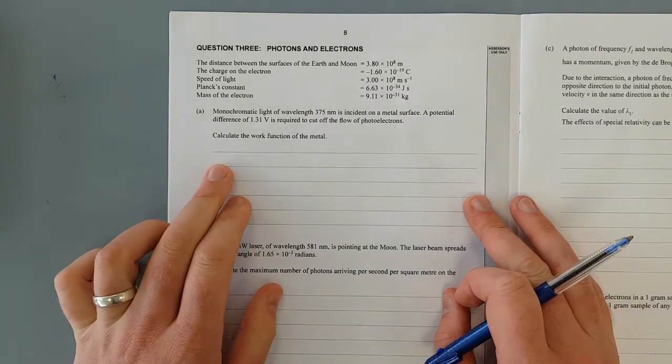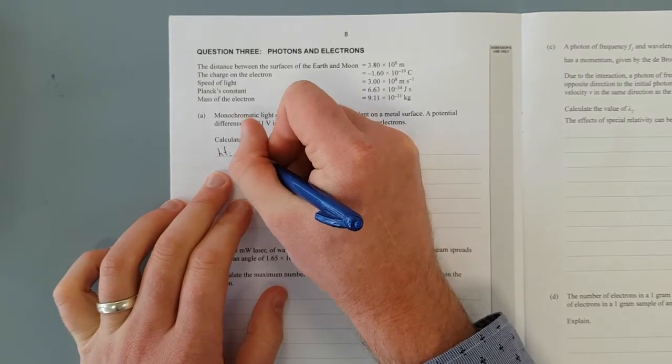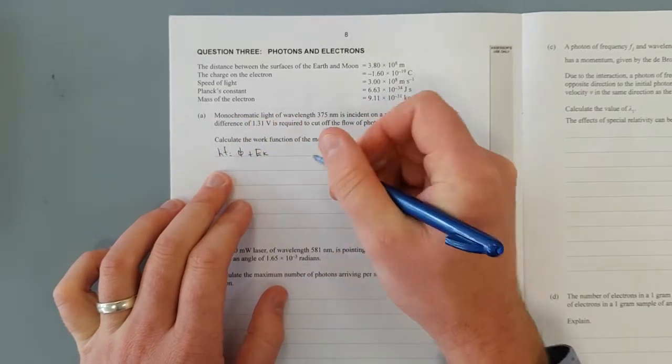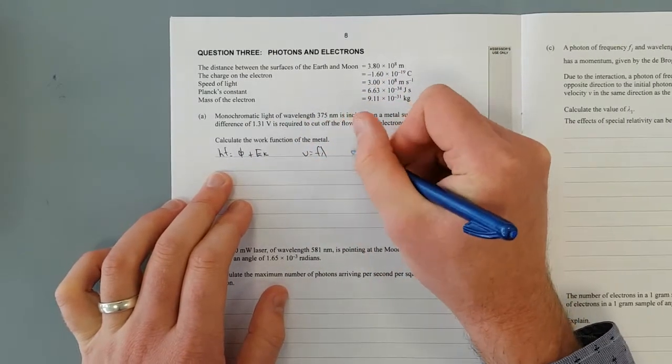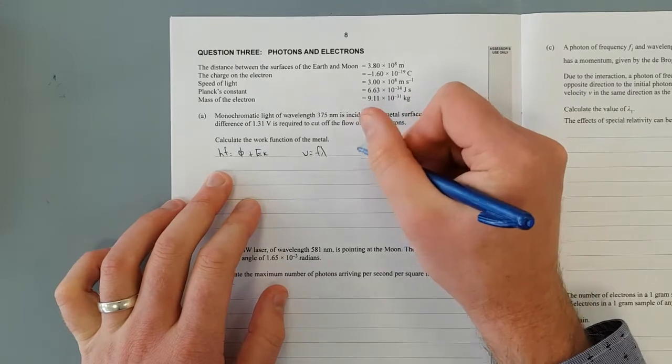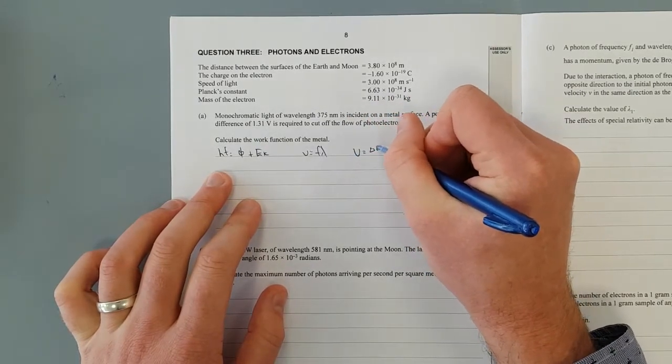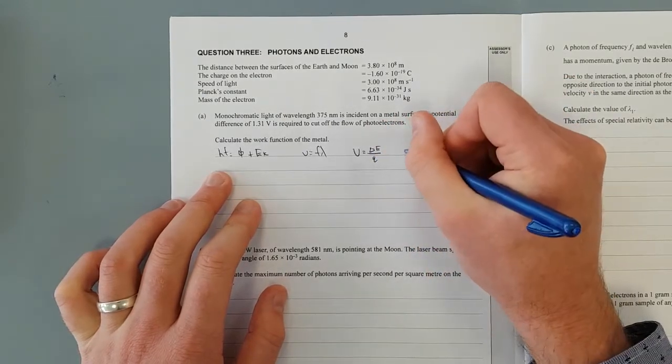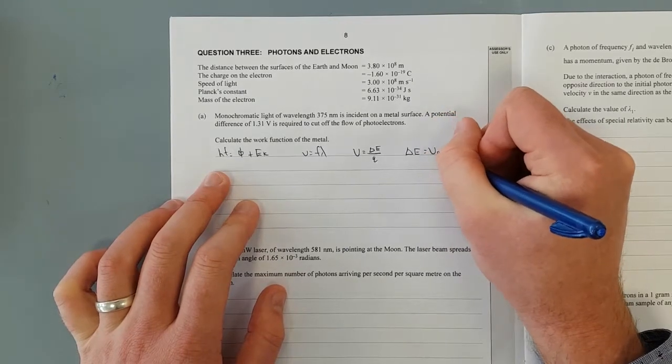Calculate the work function of the metal. So we're going to need HF equals the work function phi plus the kinetic energy. We're going to need V equals F lambda and the voltage equals joules per coulomb, so there's going to be change in energy, delta E over Q. In other words, energy, which is a scalar product, equals the voltage times the charge.